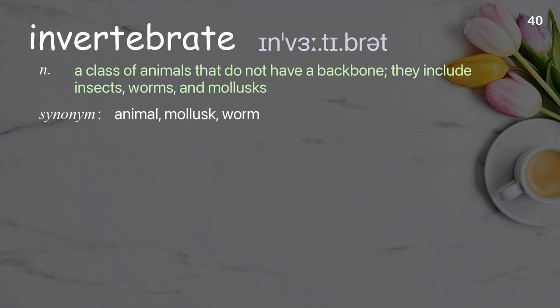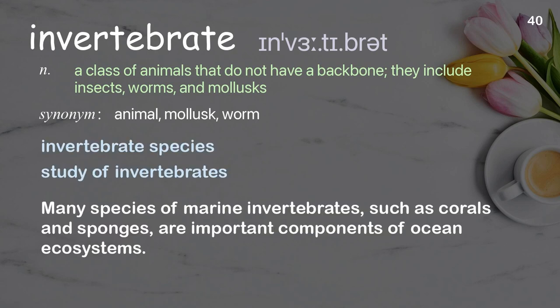Invertebrate. A class of animals that do not have a backbone; they include insects, worms, and mollusks. Examples: Invertebrate species, study of invertebrates. Many species of marine invertebrates, such as corals and sponges, are important components of ocean ecosystems.